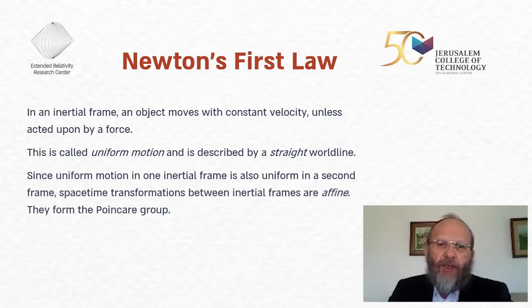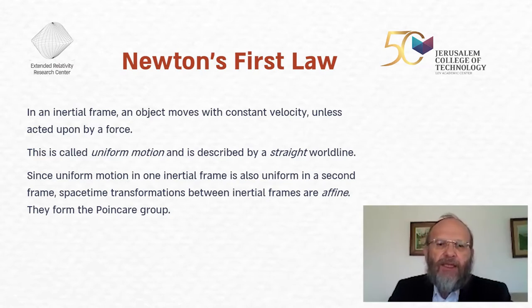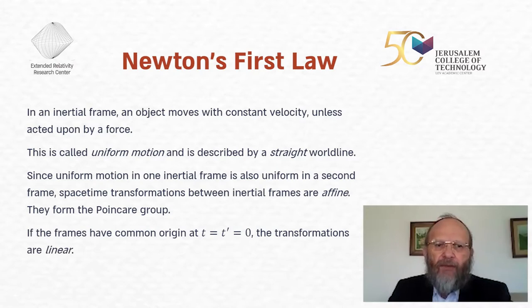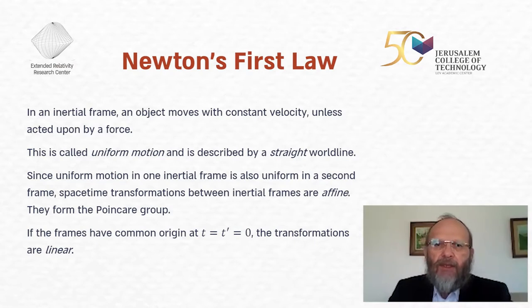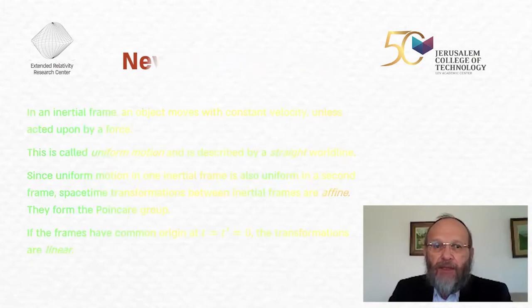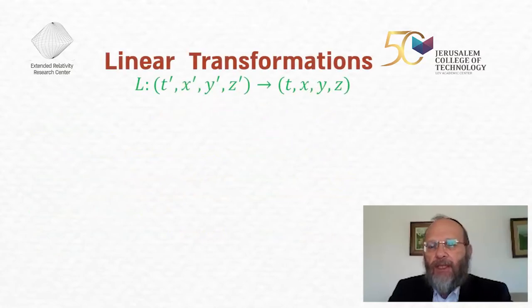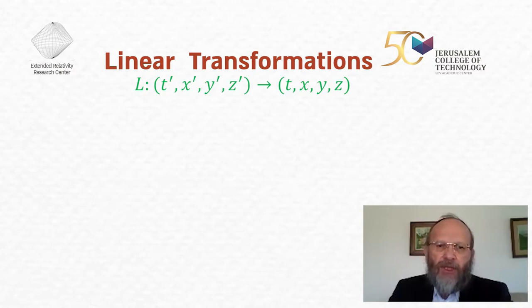These affine maps form a group called the Poincaré group, involving both translations and velocity transformations between frames. If the frames have a common origin — at time t and t-prime equal zero, the spatial origins coincide — then the zero maps to zero, and an affine transformation with zero going to zero is linear. So we discuss transformations between two inertial frames that share the same origin at time zero, and therefore the transformations are linear.